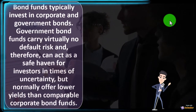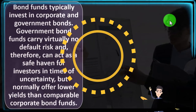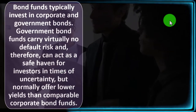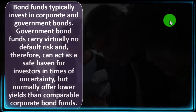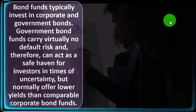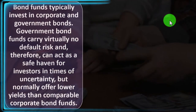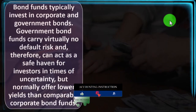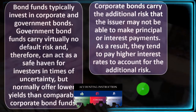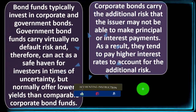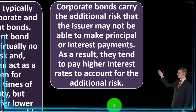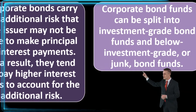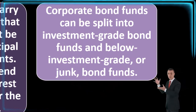Because government bond risk is so low, returns are also low. Corporate bonds, even from large corporations, are more risky than government bonds, so you would expect corporate bonds to carry higher interest rates. If we're living off the bonds in retirement, we want as low risk as possible, ideally in government bonds, but if we want higher returns we might move into corporate bonds or foreign government bonds. Corporate bonds carry the additional risk that the issuer may not be able to make principal or interest payments; as a result they tend to pay higher interest rates. Corporate bond funds can be split into investment grade and below-investment-grade, or junk bond funds.